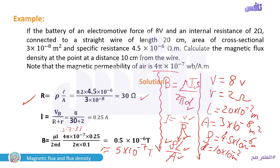The answer can be written as 5 × 10⁻⁷ Tesla. Both forms of the answer are correct. We have now completed an example on flux density and how to find it even when an unknown must be derived from another equation.